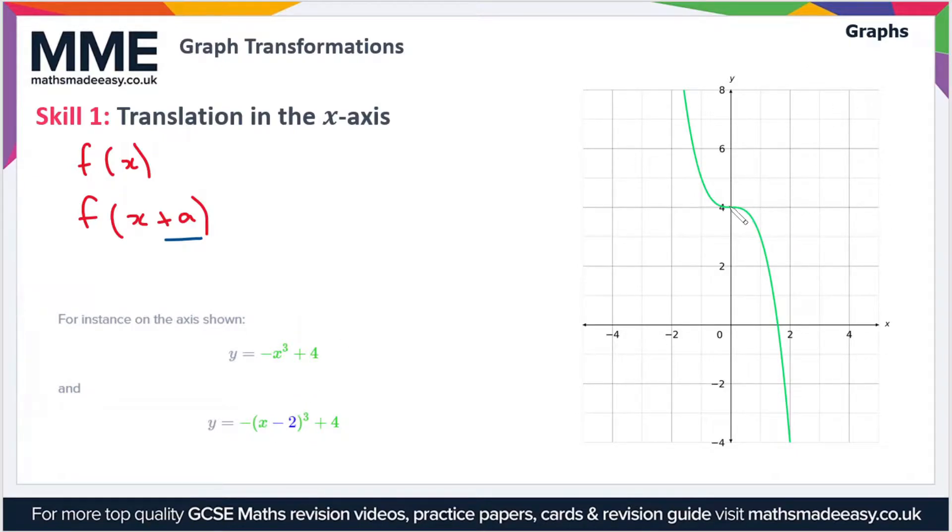Let's just take this point here which is where the graph turns, and then let's move that two spaces to the right. So that's going to be here, and then we can draw the whole graph again. So it'll look something like this. That's been shifted two spaces to the right.